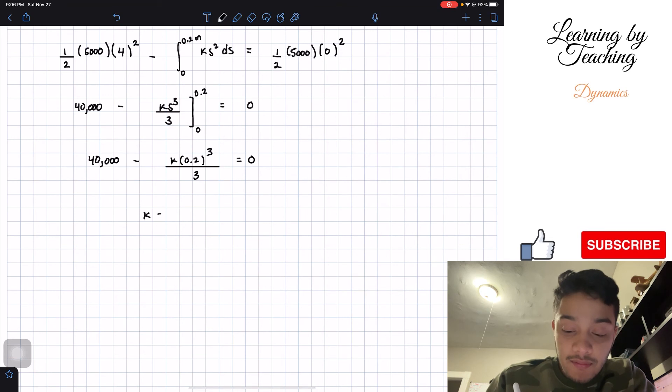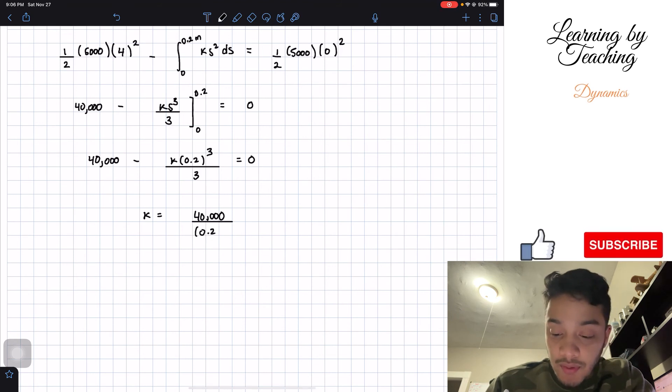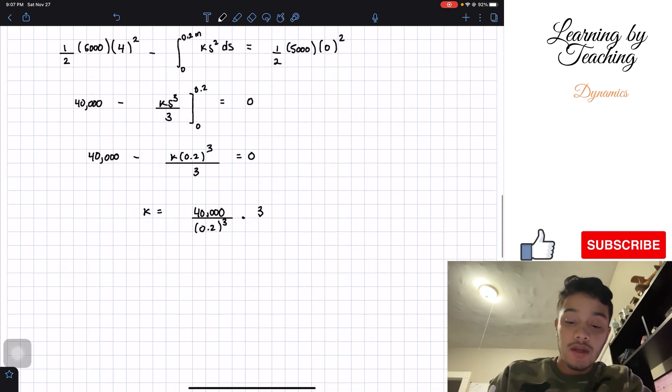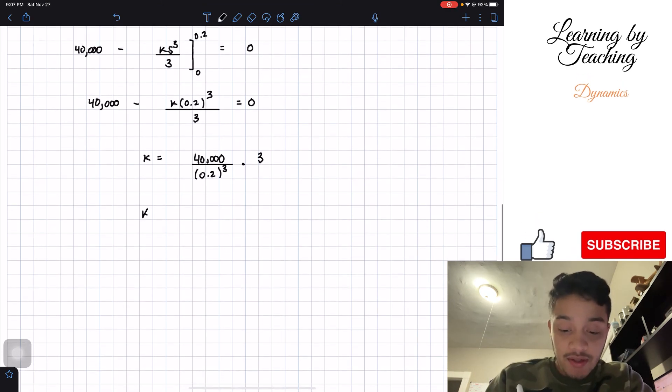If we solve for k we'll end up having 40,000 divided by 0.2 cubed and multiply it by 3. And if we plug this into our calculator this will give me a total of...